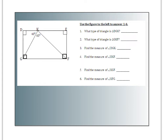Hopefully you tried numbers 1 through 6. Let's take a minute and go through the answers. Number 1: what type of triangle is triangle DGK? Here's DGK outlined in red. I notice a 90-degree corner, so that would be a right triangle.